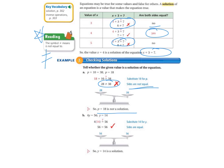Letter B, 4y equals 56, Y equals 14. 4 times 14, does that equal 56? When we substitute in 14 for y and we multiply, we get 56 equals 56. So the sides are equal. So y equals 14 is a solution.